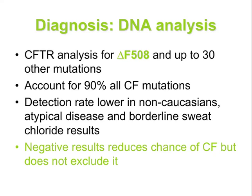Diagnosis can also be made by DNA analysis; CFTR analysis for the delta F508 and up to 30 other mutations is currently available, accounting for 90% of all CF mutations. Detection rate is lower in non-Caucasians, atypical disease, and those with borderline sweat chloride results. Negative results reduce the chance of cystic fibrosis but do not exclude it, as they may have a genetic mutation not picked up by the DNA analysis.